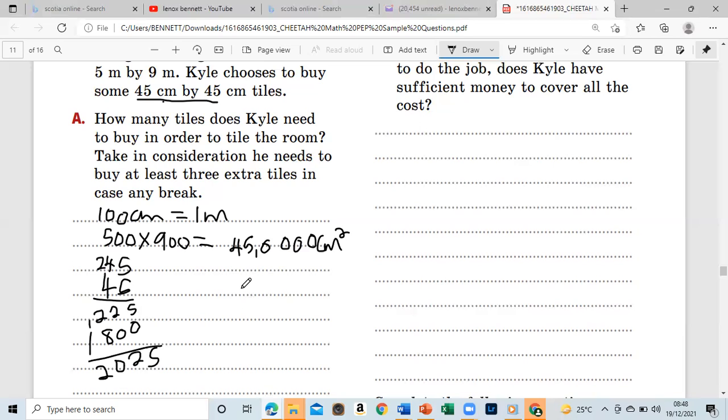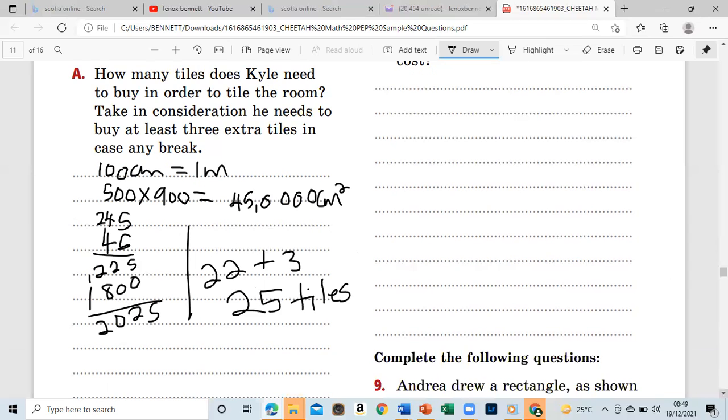Basically I used my calculator and I got 22. However, they say that they must have three extra tiles, so they add three to it. So we must buy at least 25 tiles. This is a really tough one guys without calculator. Can be done without calculator, but I prefer to use the calculator because I don't have so much time.